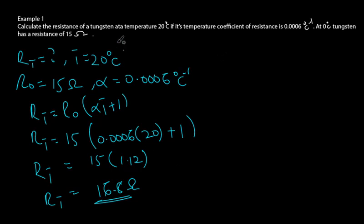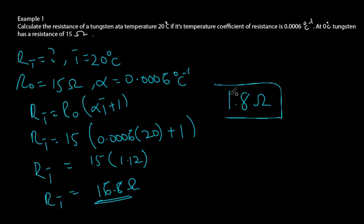So R_t equals 15 times 1.12, giving 16.8 ohms. The resistance offered by the tungsten wire at 20 degrees Celsius is 16.8 ohms. As the temperature rose from zero to 20 degrees Celsius, the resistance increased by 1.8 ohms — a significant change. This is how we solve an example on temperature coefficient of resistance.